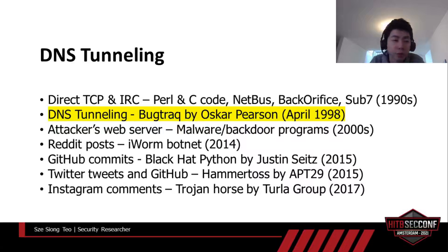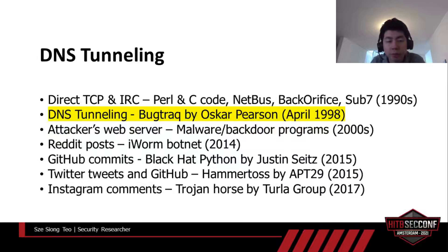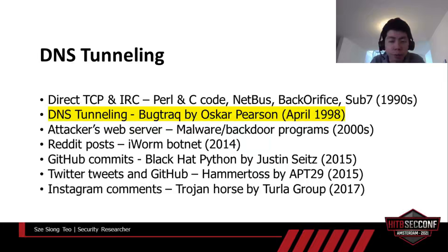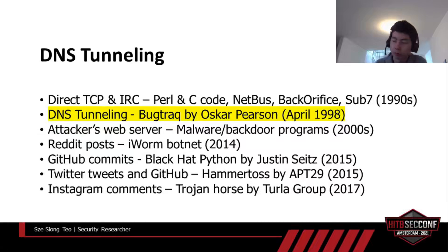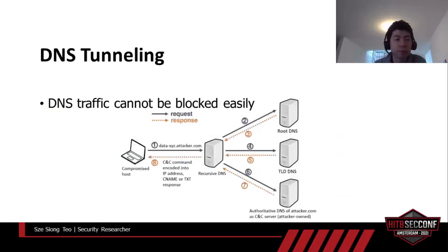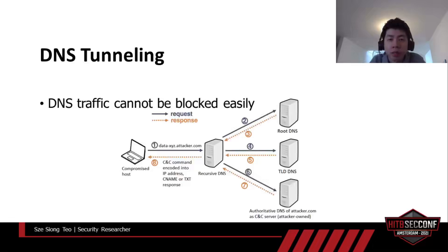For many years, HTTP protocol has been used by most malware as the C&C channel to communicate with the attacker's server, even today. Until 2014, we started to see reports that Reddit, GitHub, Twitter, and Instagram were being used as C&C channels. However, these are mostly C&C channels used by malware running on end users' personal computers, and most will fail on corporate servers with strict firewall outbound rules. Among all the mentioned channels, the only technique that is tricky to block is DNS tunneling.